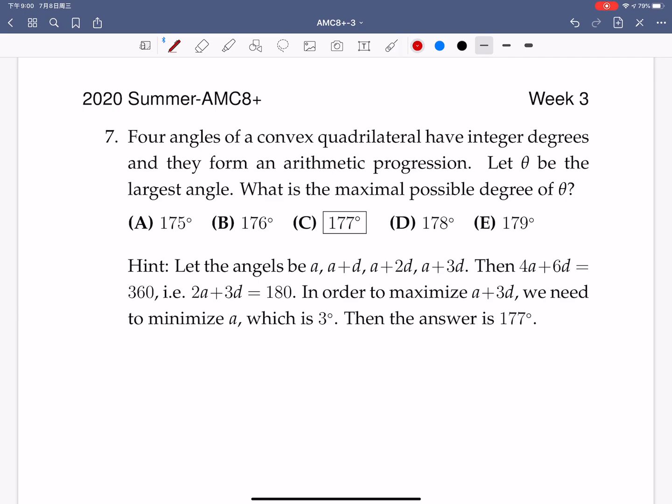Number seven. So if we have four angles of a convex quadrilateral have integer degrees and they form an arithmetic progression and what is the maximum possible of theta. So we use the hint, so suppose the angles be A, A plus D, A plus 2D, and A plus 3D. So if you add them together because we have quadrilateral then 4D plus 6, which is A plus A plus D plus A plus 2D plus A plus 3D, totally we get 4A plus 6D. That's supposed to be equal to 360, and so that's equivalent to say that 2A plus 3D is equal to 180 degree.